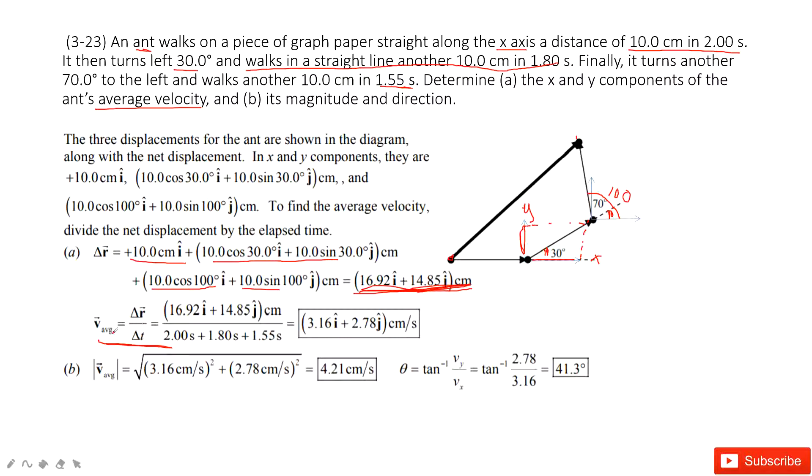The average velocity is in two components, i-component and j-component. Next, we need to find the magnitude and direction. Just find the magnitude and direction for a vector: i-component squared plus j-component squared, square rooted. And angle theta is arc tangent v_y divided by v_x. Thank you.